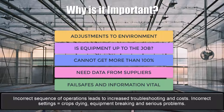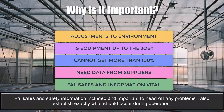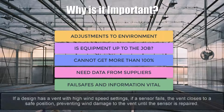If the sequence of operations is incorrect, it can add to the overall troubleshooting and costs. Simply put, the settings need to be correct or crops die, equipment breaks, and other serious problems can occur. Fail safes and safety information are also included in this process and are very important to head off any potential problems and to establish exactly what should occur during operation. For example, if a design has vents with high-speed wind settings and a wind speed sensor fails, the vent can be configured to close to a safe position, preventing any wind damage until the sensor is repaired.